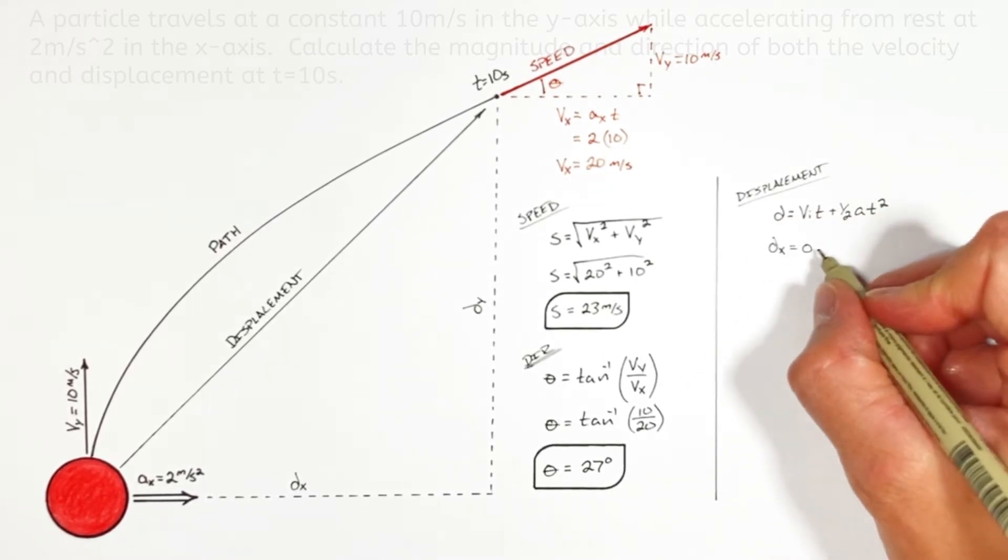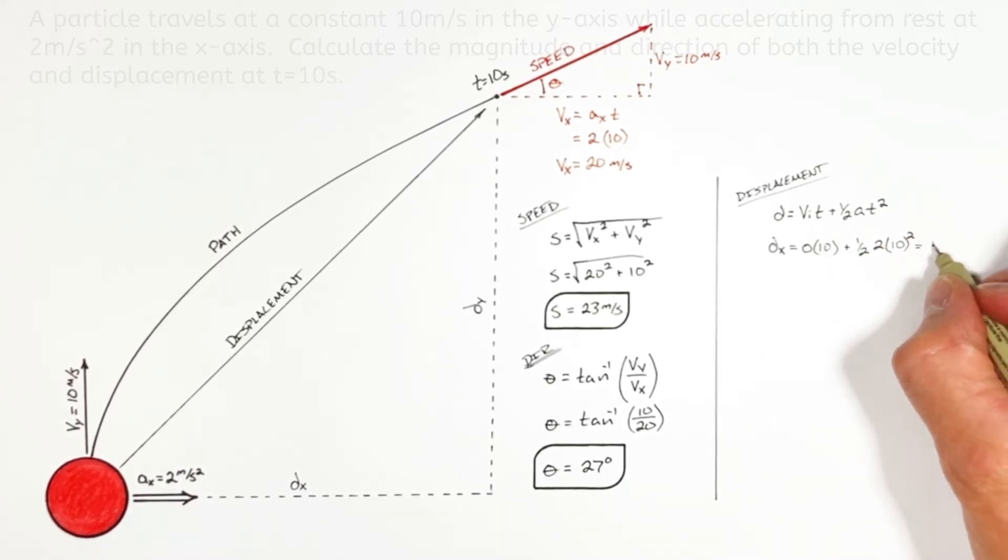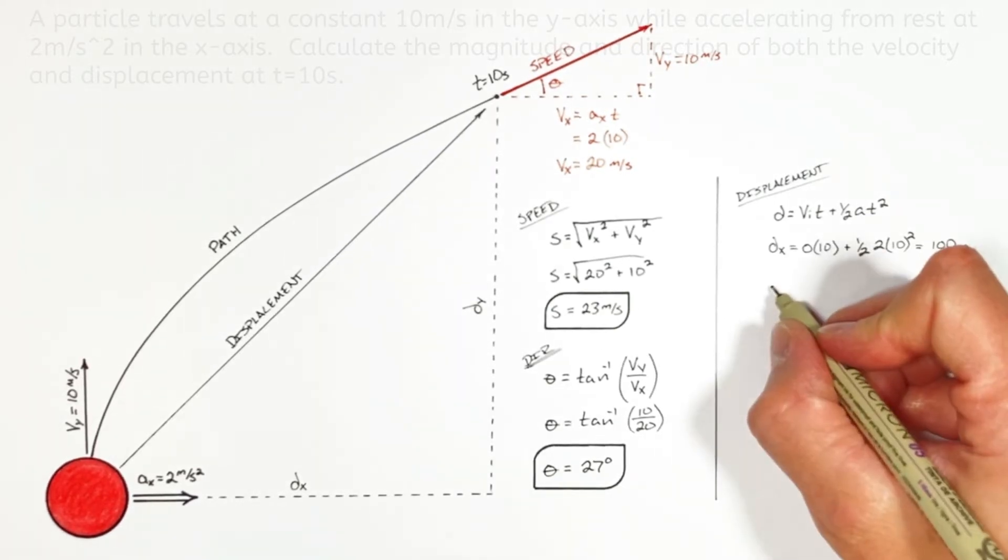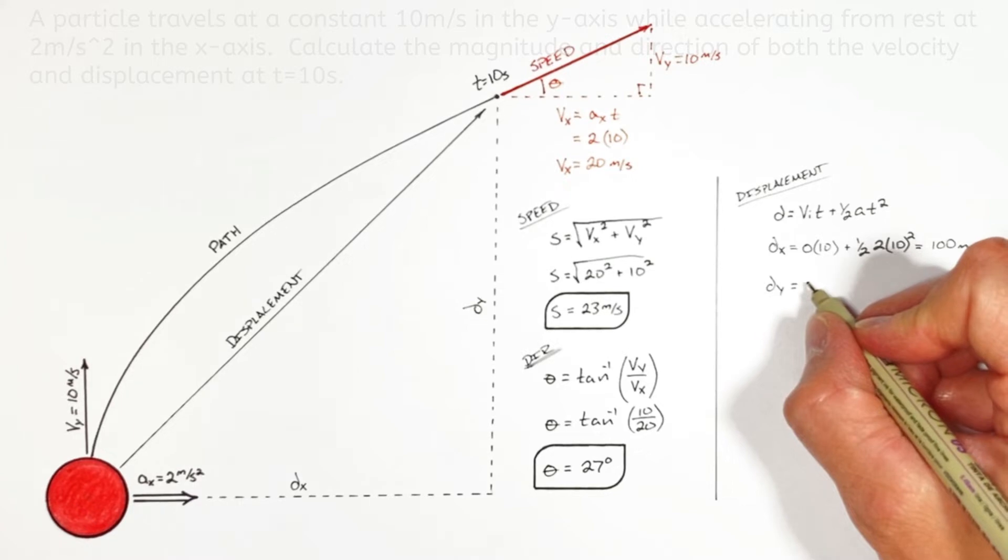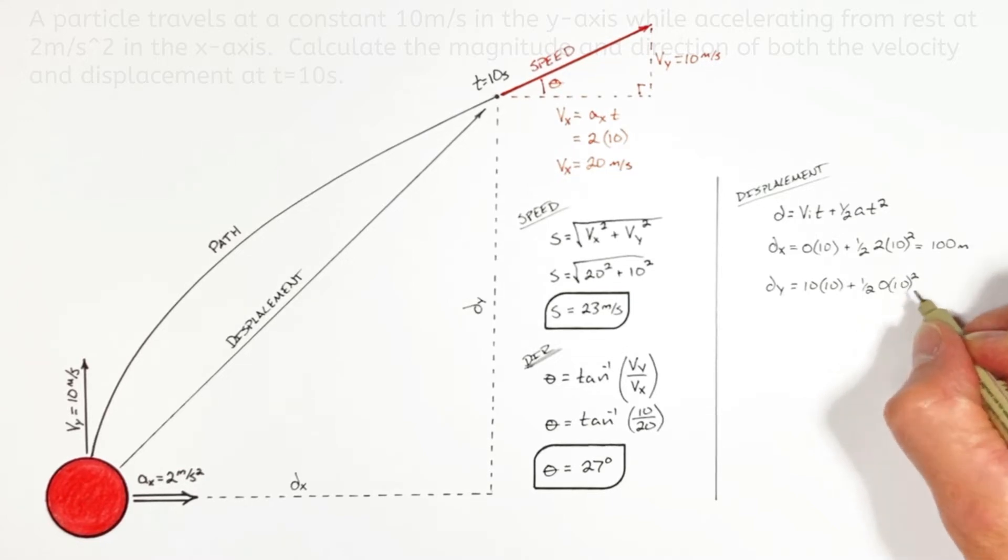In the x-axis the ball starts at rest and it's going to accelerate at 2 meters per second squared which means after 10 seconds it's traveled 100 meters. In the y-axis the ball is going to travel at a constant 10 meters per second for 10 seconds and therefore is going to travel 100 meters in the y-axis.